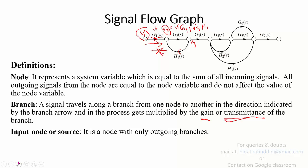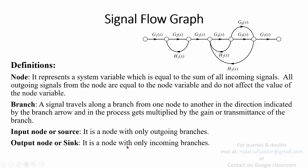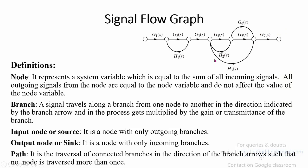An input node, or source, is a node with only outgoing branches. An output node, or sink, is a node with only incoming branches. A path is defined as the traversal of connected branches in the direction of the branch arrows such that no node is traversed more than once. All three conditions must be satisfied: traverse along connected branches, move in the direction of branch arrows, and no node is visited more than once.